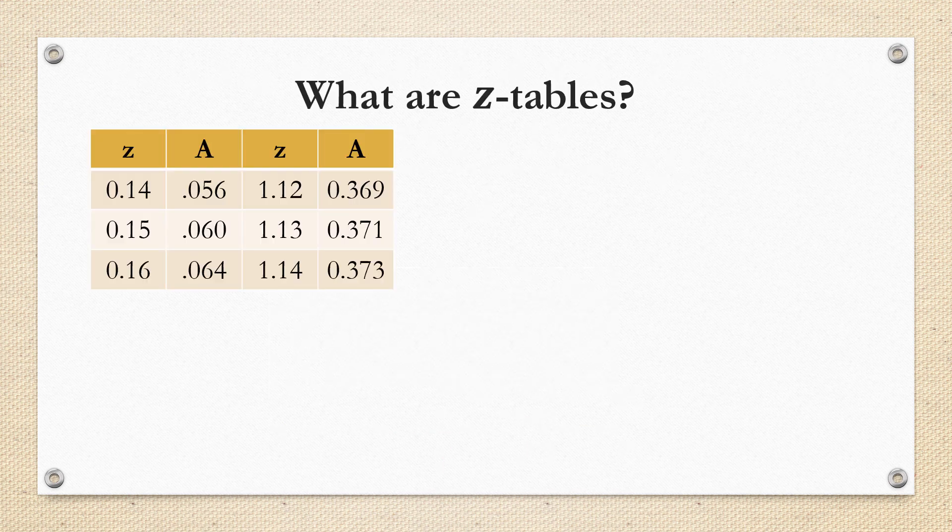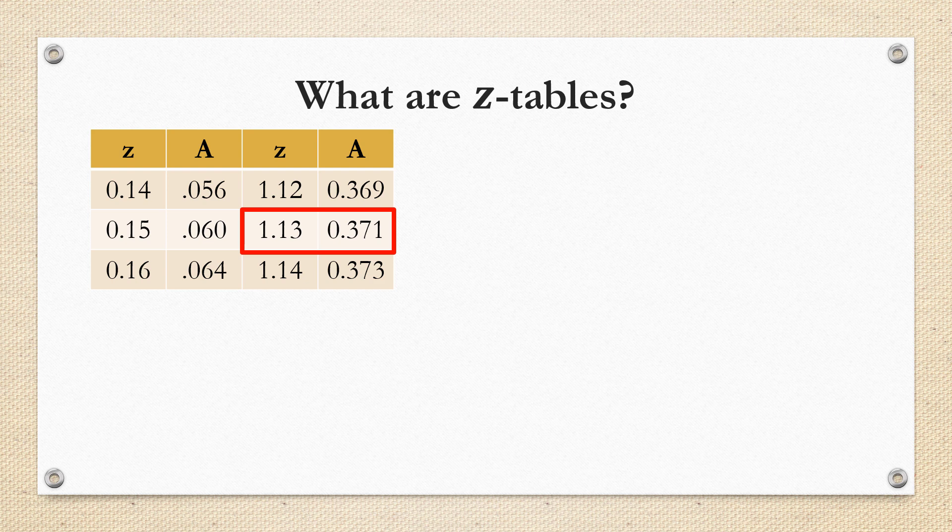A z-table is just a chart that gives you a list of z-scores and an area associated with those z-scores, but which area depends on the type of table you're looking at. For example, a z-score of 1.13 is associated with an area of 0.371. But what does that represent?